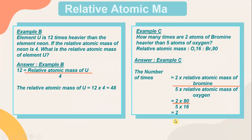Example B: element U is 12 times heavier than element neon. If the relative atomic mass of neon is 4, what is the relative atomic mass of element U? You know the number of times U is heavier is 12, but you don't know the relative atomic mass of U. To get the relative atomic mass of U, you have to cross-multiply: 12 times 4 equals 48. So the relative atomic mass of U is 48.